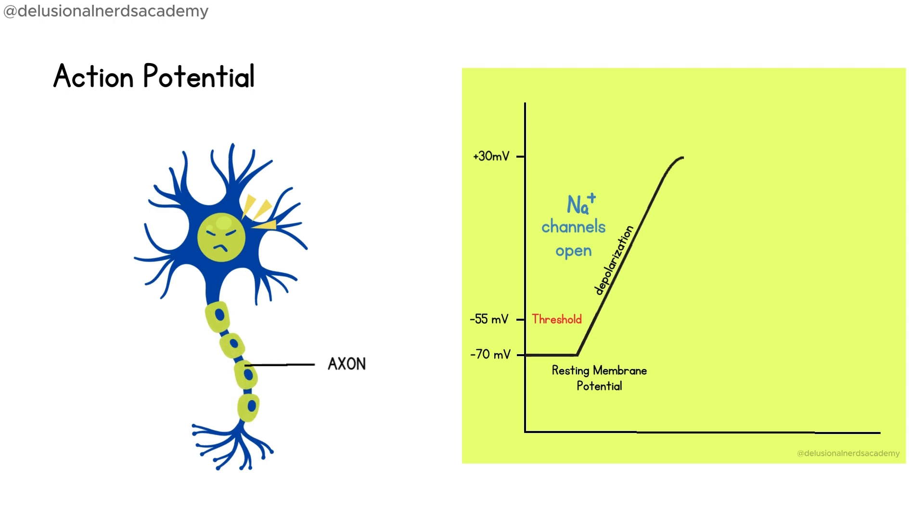After reaching this peak, the neuron needs to return to its resting state. This process is called repolarization, and it occurs when the sodium channels close and potassium channels open, allowing the positively charged potassium to flow out of the neuron, bringing the membrane potential back to the negative value.